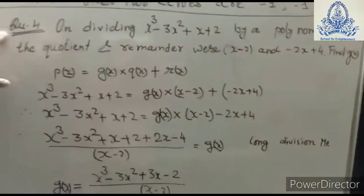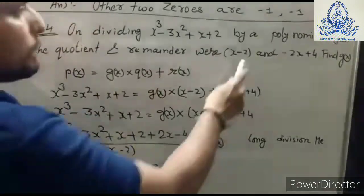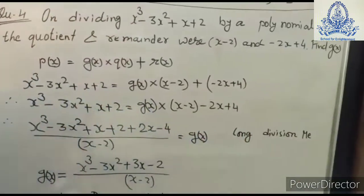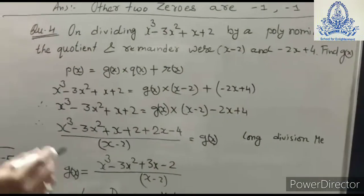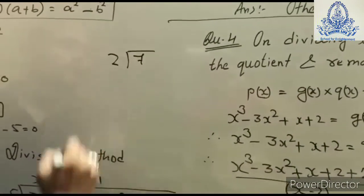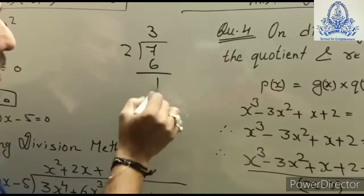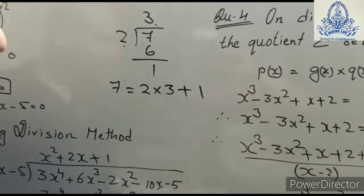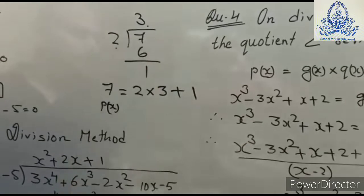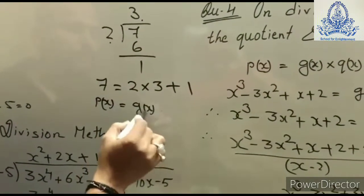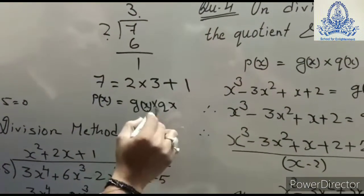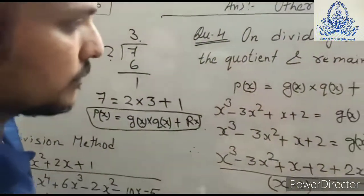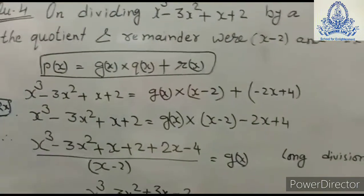Now question number four says: on dividing p(x) by a polynomial g(x), the quotient and remainder are x − 2 and −2x + 4. To understand the formula, consider dividing 7 by 2: quotient is 3, remainder is 1, so 7 = 2 × 3 + 1. Similarly, p(x) = g(x) × q(x) + r(x). We substitute the known values of p(x), q(x), and r(x) to find g(x).